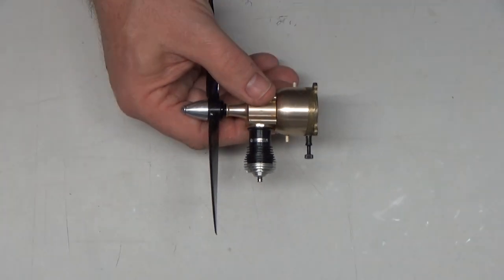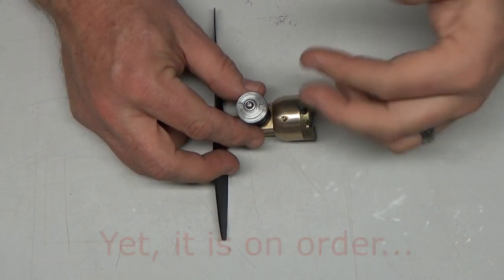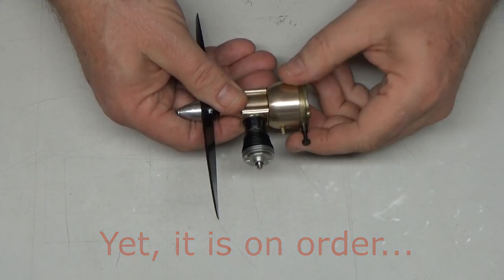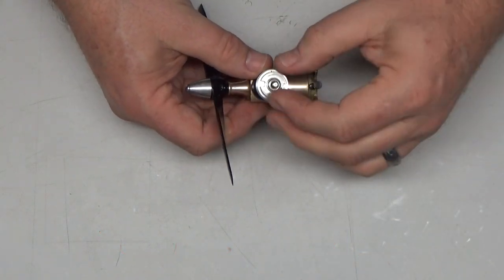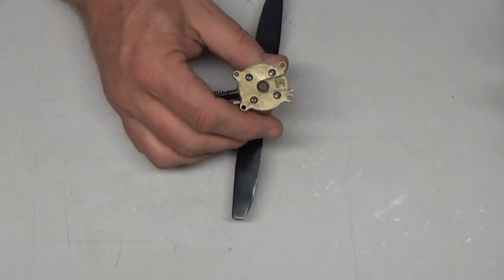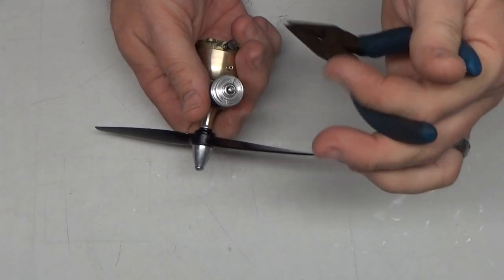Now I don't have a Cox wrench to actually take the cylinder off the case here, but I do have a set of pliers that I think I can get the glow head off. And then of course I've got a screwdriver for the tank.